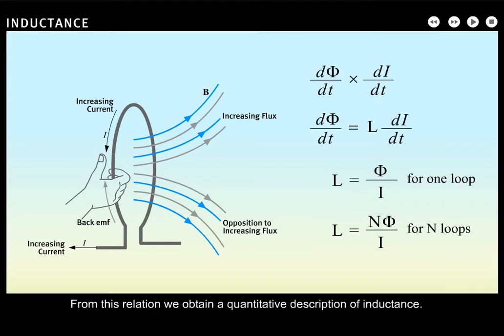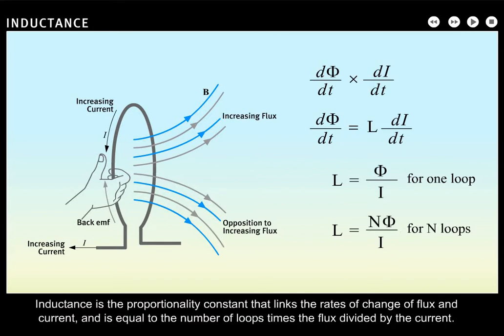From this relation, we obtain a quantitative description of inductance. Inductance is the proportionality constant that links the rates of change of flux and current, and is equal to the number of loops times the flux divided by the current.